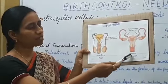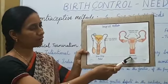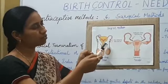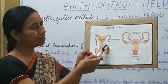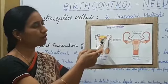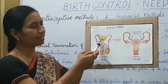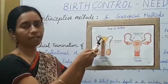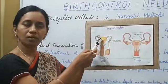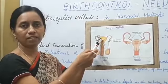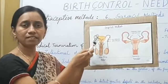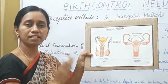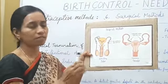In males, the two sides of the vas deferens is removed or cut and tied, so that the sperms may not enter into the seminal vesicles. The vasectomized male semen does not contain the sperms.